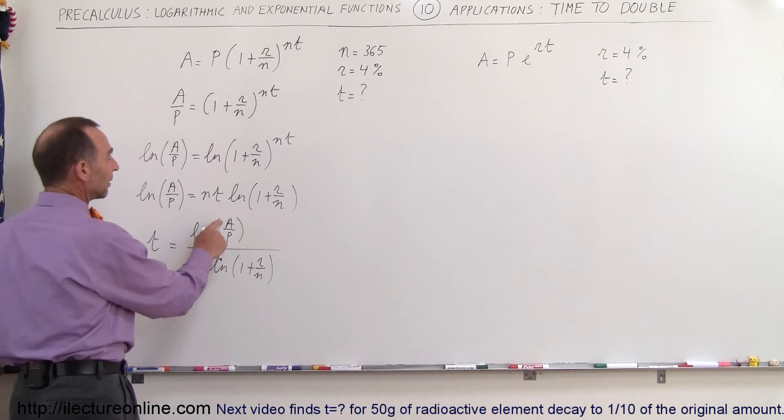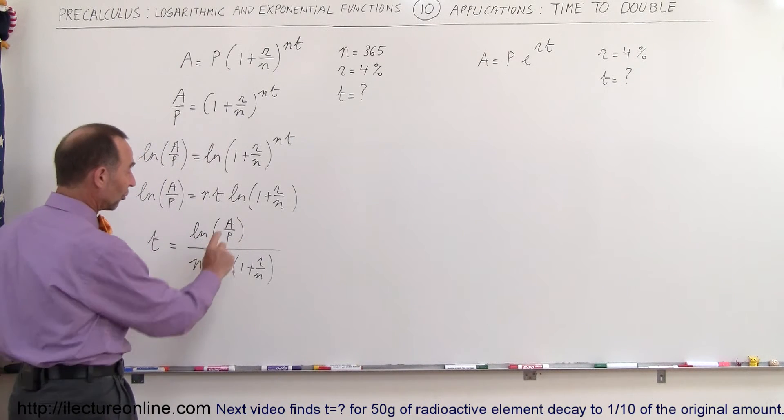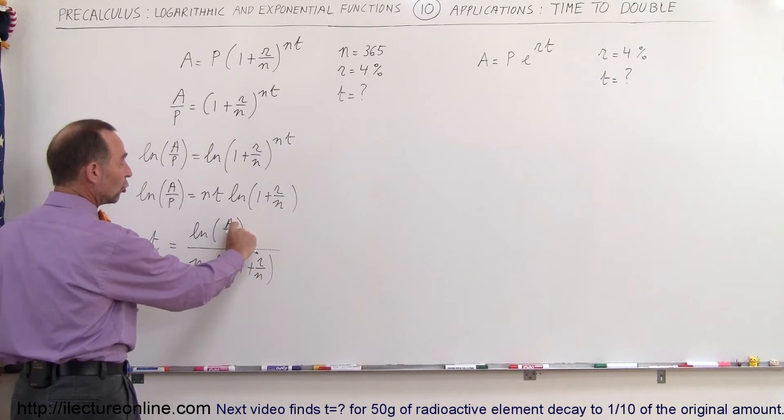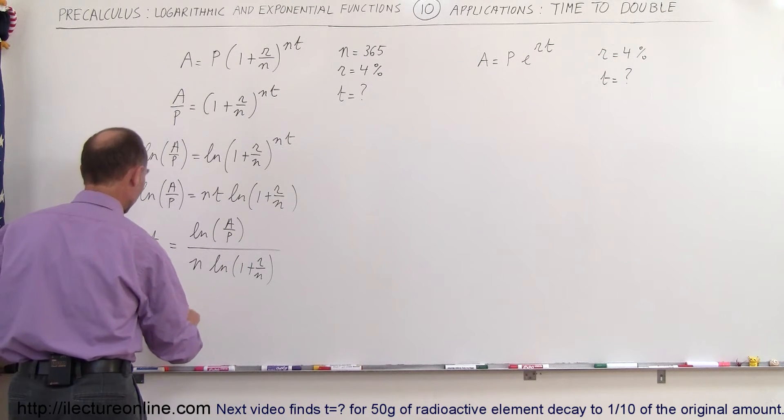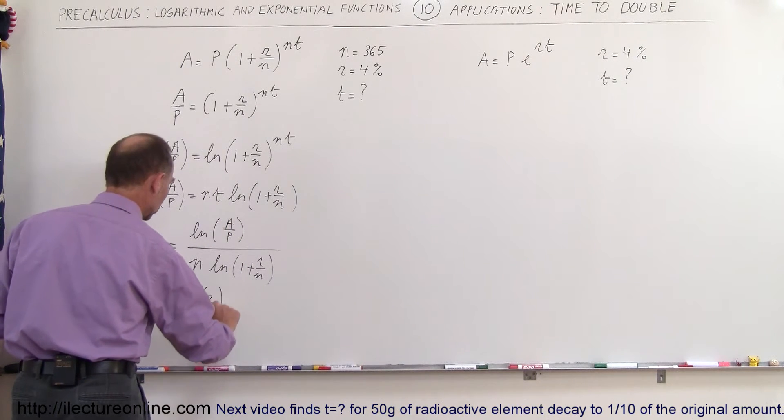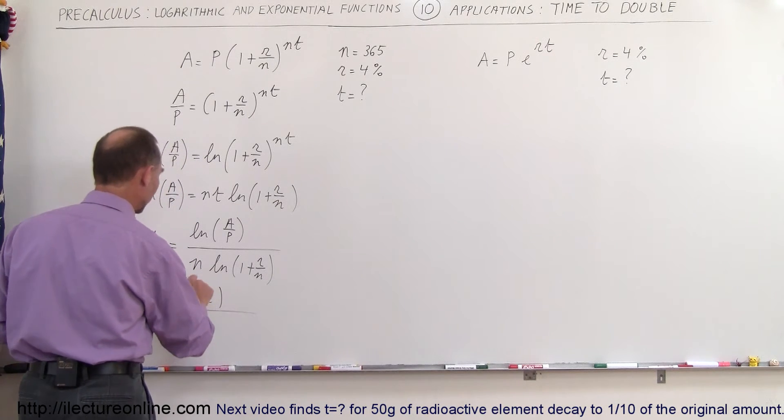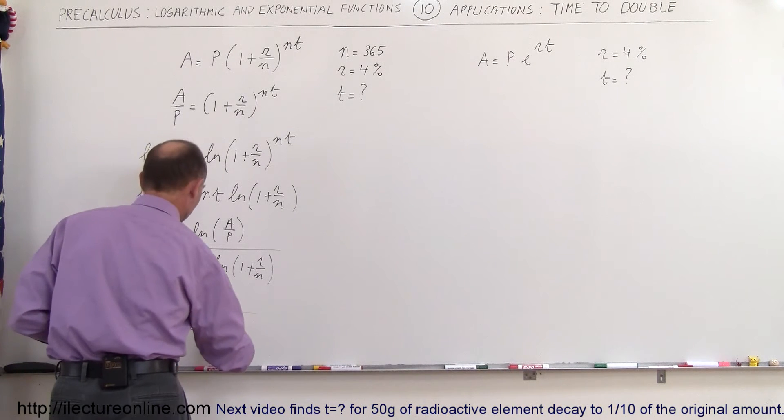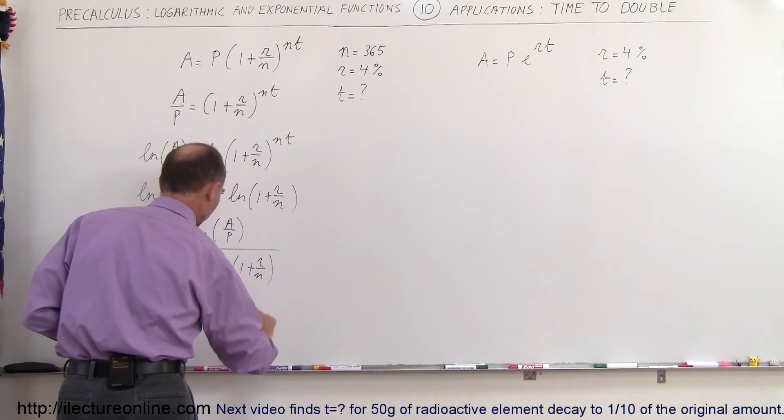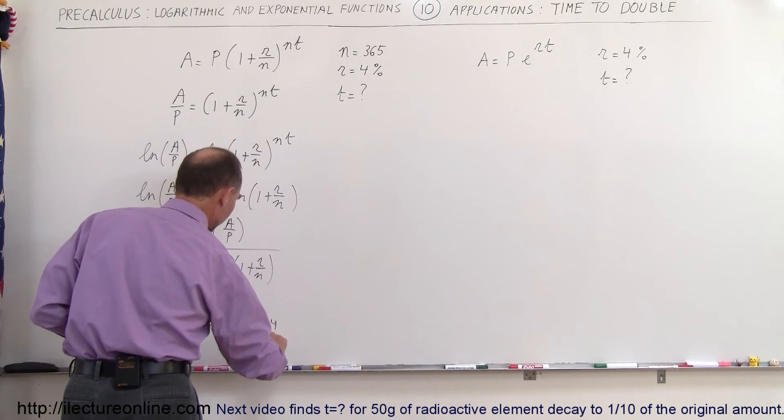Now notice the amount that we're going to end up with is going to be twice the initial principle that we invested. So this ratio here is simply going to be 2, because a needs to be twice as big as p. So we have t is equal to the natural log of 2 times n, that would be 365, because it's 365 conversions, or we compound 365 times per year, times the natural log of 1 plus r, which is 0.04 divided by 365.